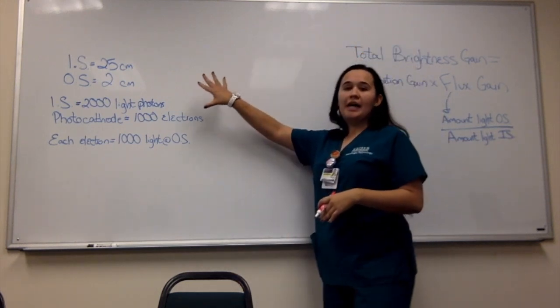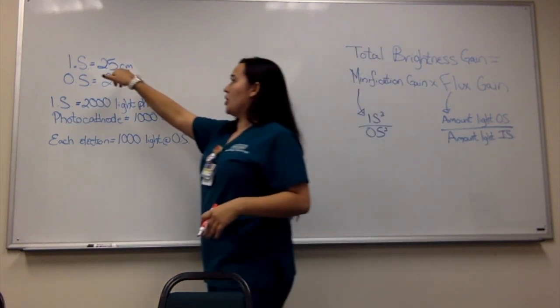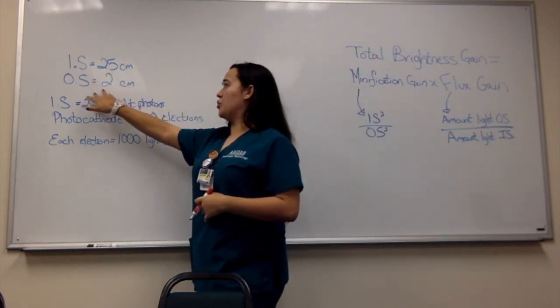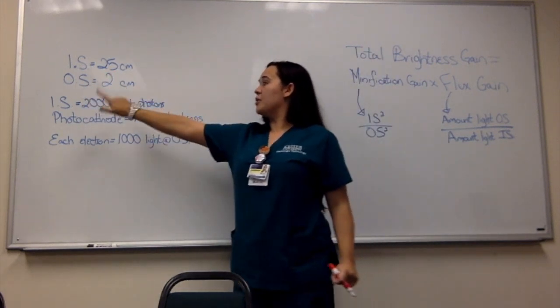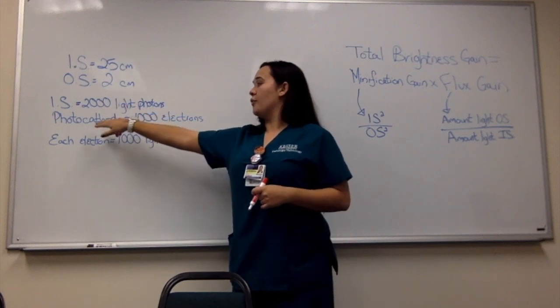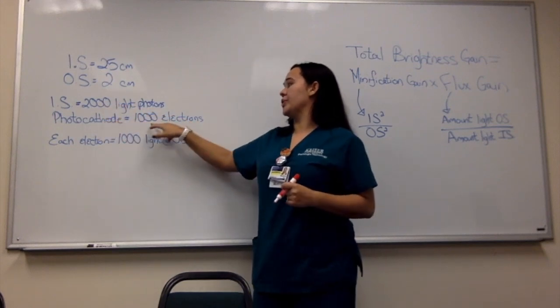So over here I have a sample problem. The input screen is 25 centimeters. The output screen is 2 centimeters. At the input screen is 2,000 light photons. When it goes to the photocathode, it turns into 1,000 electrons. Each electron gives off 1,000 light photons at the output screen.